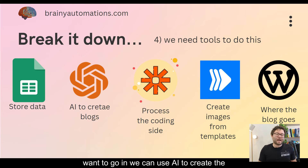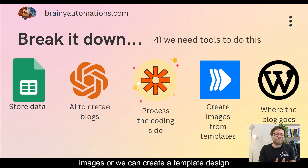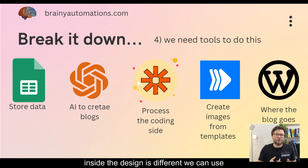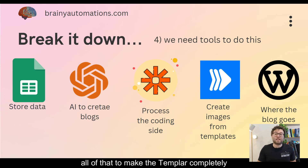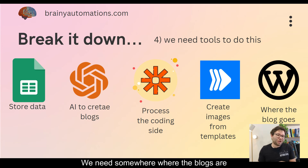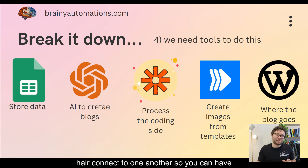Depending on the direction you want to go, we can use AI to create the images, or we can create a template design and use dynamic functionalities to populate that template. So while the overall template design is the same, the elements inside — text, placeholders, colors — can be different, keeping everything within our branding but engaging. And of course, we need somewhere the blogs are actually going to go, which is our WordPress website, and all of these tools connect to one another for a really streamlined process.